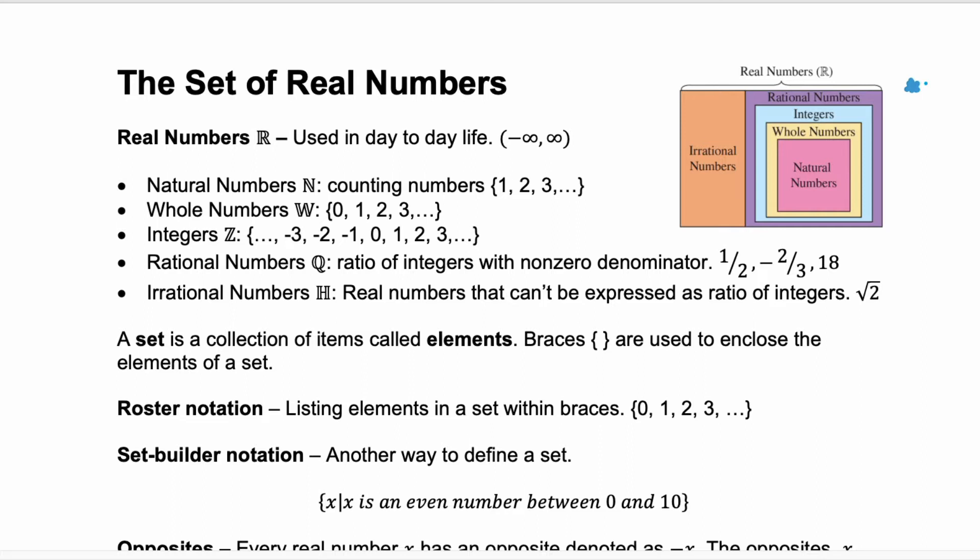We have natural numbers which are our counting numbers one two three four and so on. Whole numbers which are the counting numbers including zero. Integers take the whole numbers and then also add in the negatives.